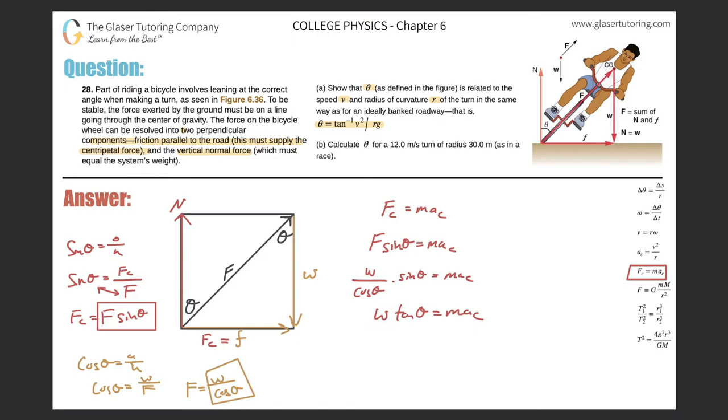Now W times the tangent of theta equals m*ac. Let's expand this W to be mg. We can now see that we're going to cancel the m on that side with the m on the other side. That's what my plan was. So we got them to cancel. Now we got g times the tangent of theta equals centripetal acceleration.